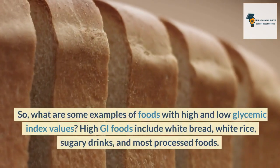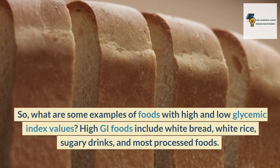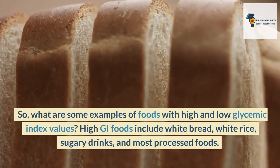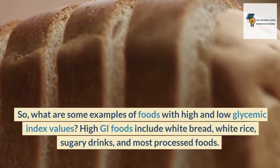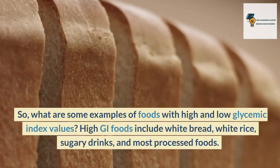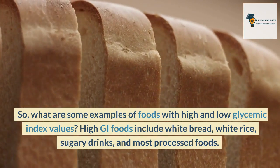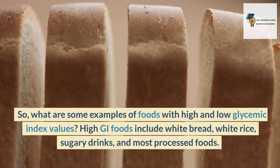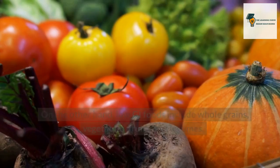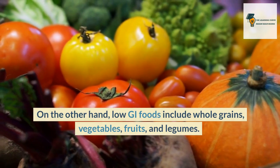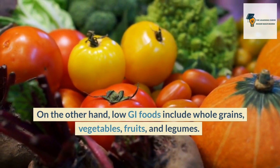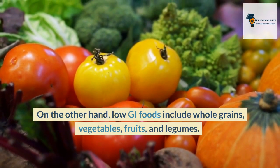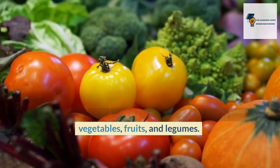What are some examples of foods with high and low glycemic index values? High GI foods include white bread, white rice, sugary drinks, and most processed foods. On the other hand, low GI foods include whole grains, vegetables, fruits, and legumes.